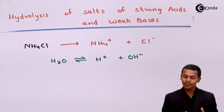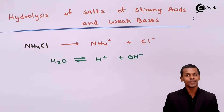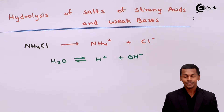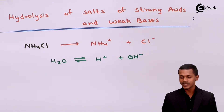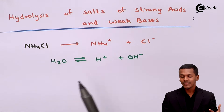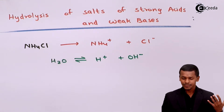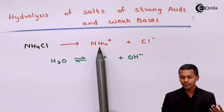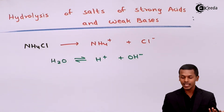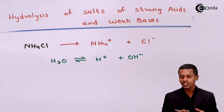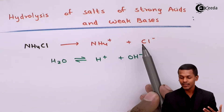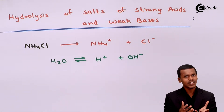When NH4Cl is reacted with water, it dissociates completely into NH4+ and Cl-. It is observed that NH4+ is more capable of attracting OH-, and that is why the solution will form NH4OH rather than Cl- combining with H+ to form HCl.